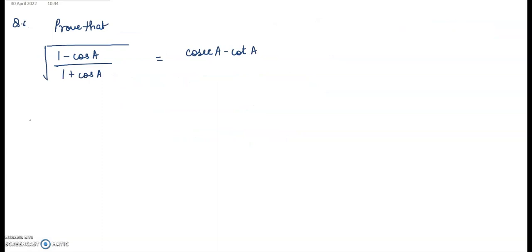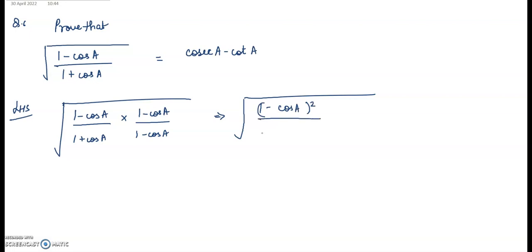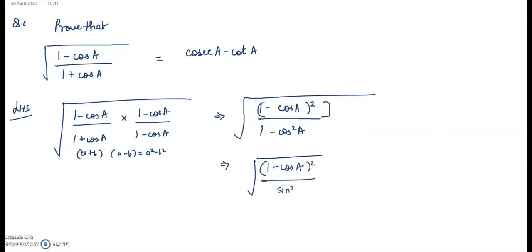We'll try this question: LHS is √((1 − cosA)/(1 + cosA)). The only option here is rationalizing. Multiply numerator and denominator by (1 − cosA): the denominator becomes (1 + cosA)(1 − cosA) = 1 − cos²A = sin²A. The numerator becomes (1 − cosA)². Taking the square root gives (1 − cosA)/sinA.